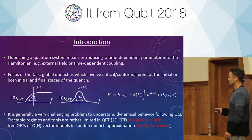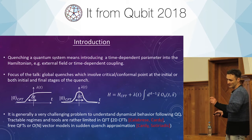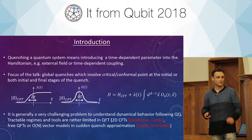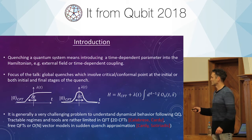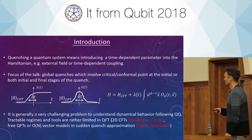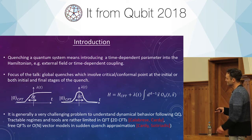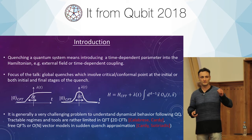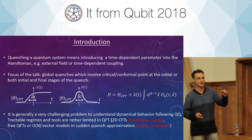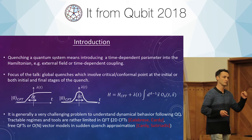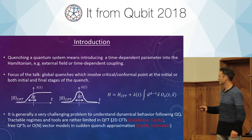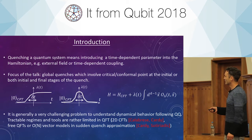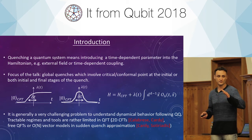Delta t will denote the characteristic time of the quench. For the purpose of this talk, we will be interested in the limit when delta t becomes very small — very short — while the amplitude of the quench is fixed.